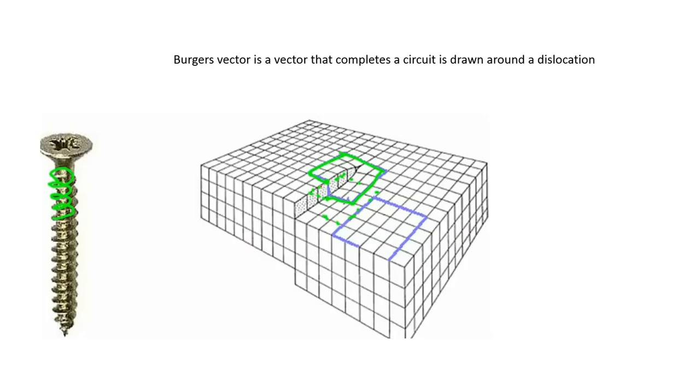It's called screw dislocation because if, say, for example, we start from here, go two to the left, one, two, three, four to the right, one, two, three, four to right again, and then four back, two to the left, then this is our first Burger's vector. If we continue another two, and then four, four, four, four, two, then we see we are going around in the spiral paths, and it's the same as spiral paths of a threaded screw, that's why it's called screw dislocation.